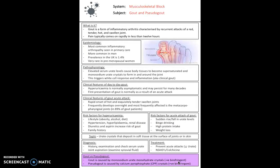Next we have gout and pseudogout. Gout is a form of inflammatory arthritis characterized by recurrent attacks of red, tender, hot, and swollen joints. The pain typically comes on rapidly in less than 12 hours. We'll look at arthritis in a few moments. But gout first of all is an acute attack of red, tender, hot, and swollen joints. It's the most common inflammatory arthropathy we see in primary care, much more common in men than women. It's very rare, particularly in premenopausal women.